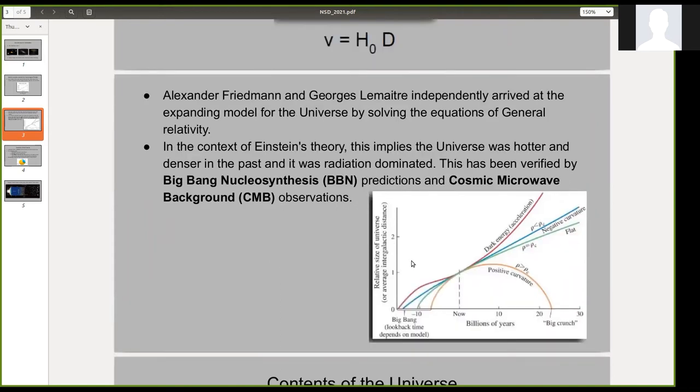The figure here shows the eventual fate of the universe depending upon its matter density. If the matter density of the universe is greater than some critical density, then the universe would stop expanding at some point and start contracting. But our universe happens to be an accelerating universe because of the presence of dark energy, which I will explain later.